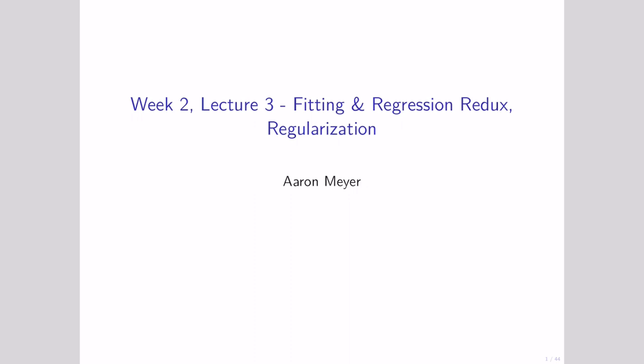Welcome back. So now we have an idea that we can use a little bit of bias in order to reduce the variance of our model, and we might end up with a model that has better properties — specifically, it might be able to predict new things more effectively.